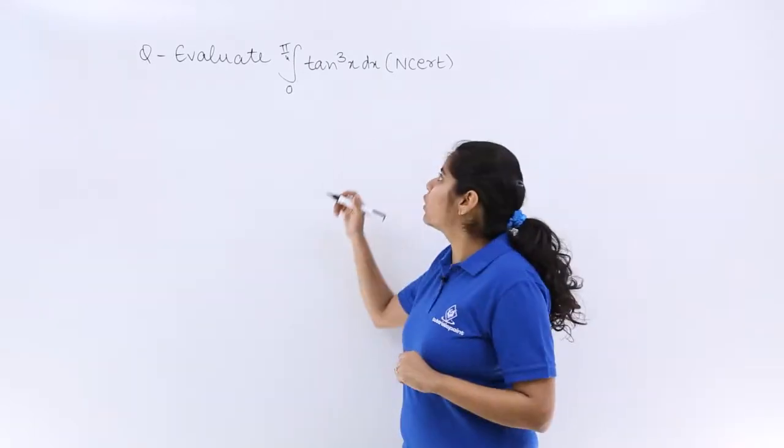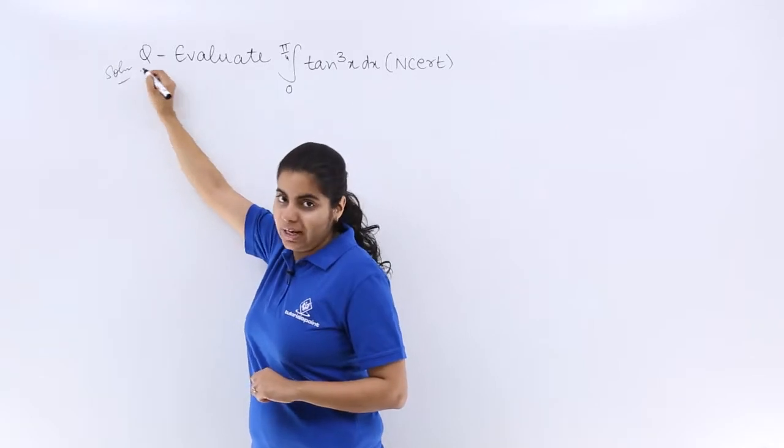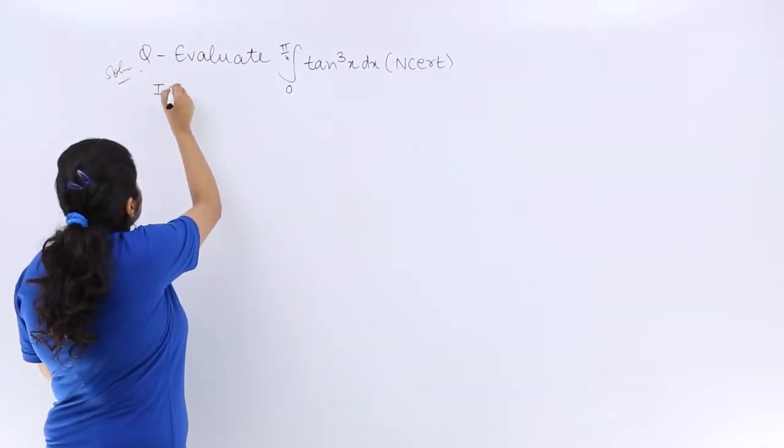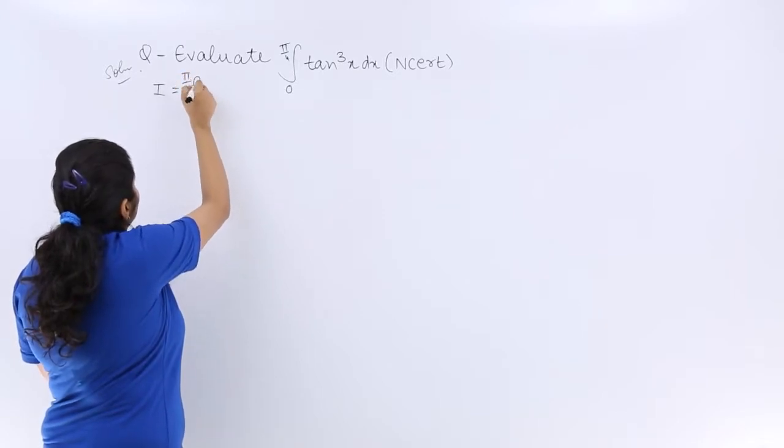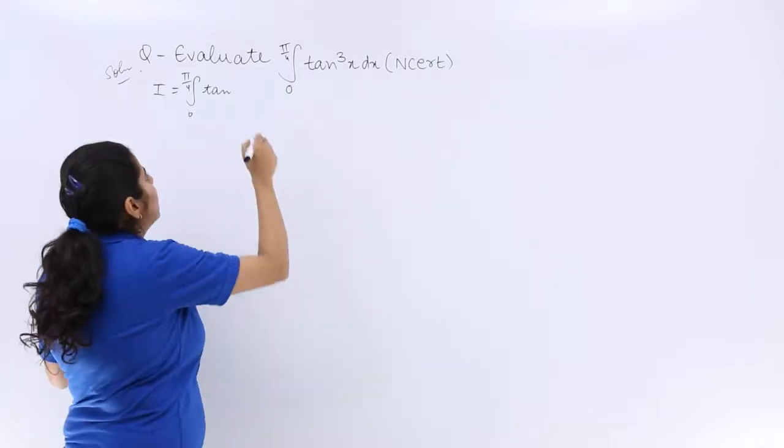So if my given question is I, then how to go about it? I am going to teach you that. I have written the solution, let's start with it. Let me write the question again: I = ∫₀^(π/4) tan³x dx. Now tan³x can be written